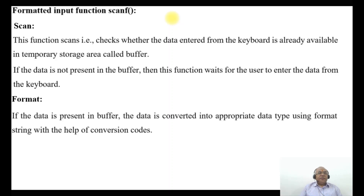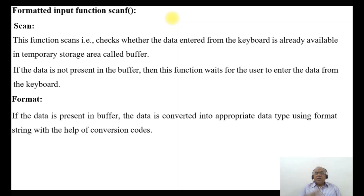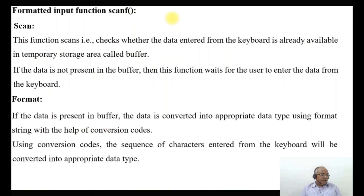If data is present in the buffer, the data is converted into the appropriate data type using a format string with the help of conversion codes. So whatever data is entered, that data is converted into an appropriate data type — like whether it is an integer or a float variable — using those conversion codes.